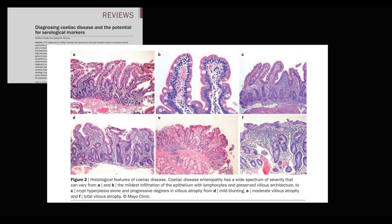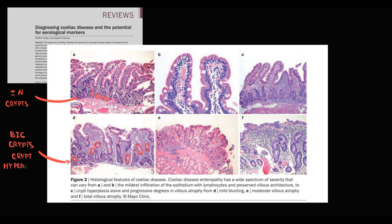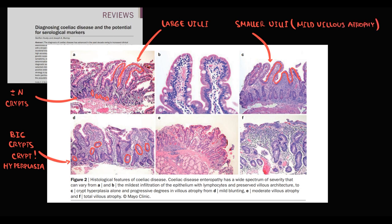On a real biopsy sample, we can see normal morphology initially, with normal-sized intestinal crypts. As celiac disease progresses, crypts become larger — a finding called crypt hyperplasia. The villi, which are normally large to provide absorption of an enormous number of substances, begin to decrease in size as intraepithelial lymphocytes destroy the superficial layer — a feature called villus atrophy. As the disease progresses further, villi become practically invisible, a state called total villus atrophy.